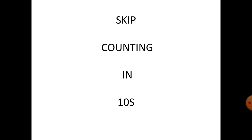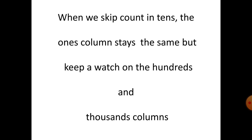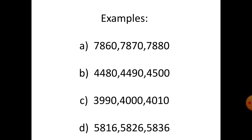When we skip count in tens, the ones column stays the same, but keep a watch on the hundreds and thousands columns. Example A: seven thousand eight hundred and sixty, add ten — seven thousand eight hundred and seventy.